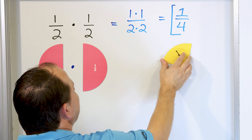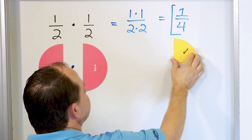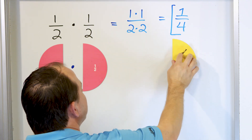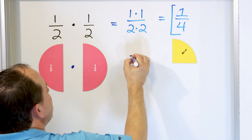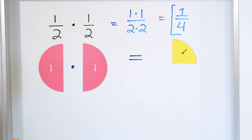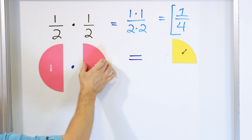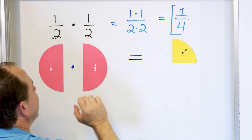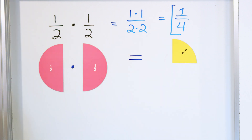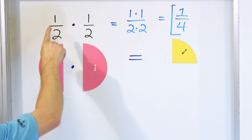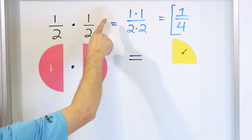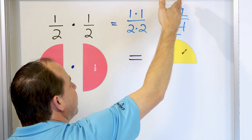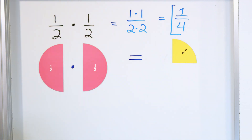The fraction one fourth is what we get, and that is our final answer. Mechanically, we multiply the tops and get an answer, multiply the bottoms and get an answer, simplify, and that is our answer.